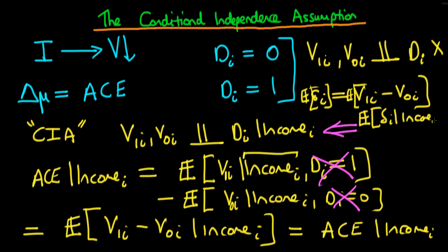That would just be the expectation of delta I given the level of income I. And it's easy to see how this expression on the right-hand side would be exactly equal to that on the bottom. The conditional independence assumption is going to allow us to formulate econometric models which allow us to evaluate the average causal effect — not the unconditional average causal effect, but the average causal effect conditioned on a number of variables, or put another way, the average causal effect holding a number of important determinants of violence constant.